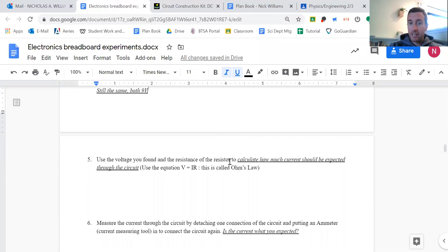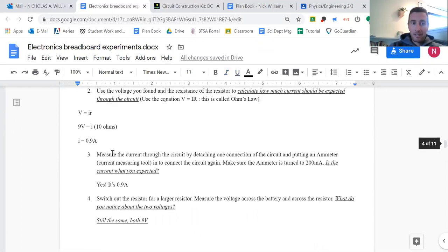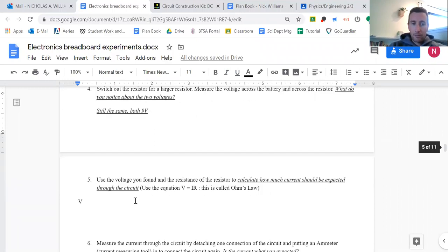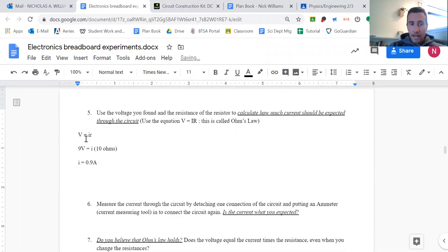Use the voltage you found and the resistance of the resistor to calculate how much current should be expected. Okay, so same deal. In fact, I'm just gonna copy and paste, to be honest, because I'm only changing one thing. Copy, paste, V equals IR, nine volts equals current times, now I've made it a hundred ohms, and when I divide by a hundred, I should get 0.09 amps. So I would expect 0.09 amps now, based on nine divided by a hundred.